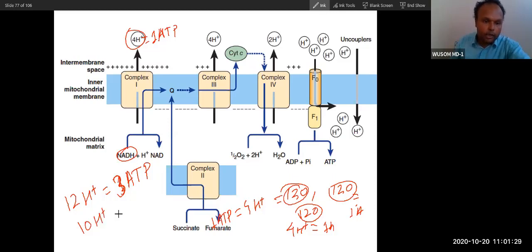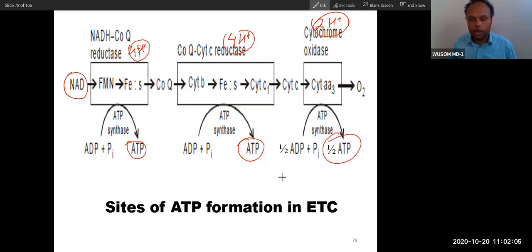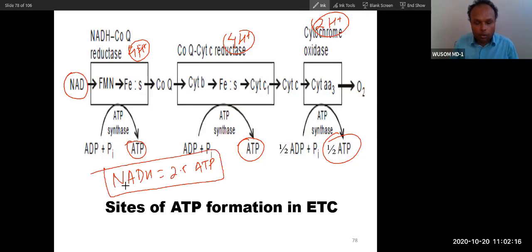Here, NADH will cause pumping of 10 H+. That is why we call it 2.5 ATP because of 1 NADH. When 1 NADH flows, it will pump 4 H+ and 4 H+ equals 1 ATP. Again it will pump 4 H+, which equals 1 ATP. Then again here at complex 4 it will produce 2 H+. 2 H+ equals half ATP. So this is how we know that 1 NADH equals 2.5 ATP. This is how I have explained why 1 NADH equals 2.5 ATP.